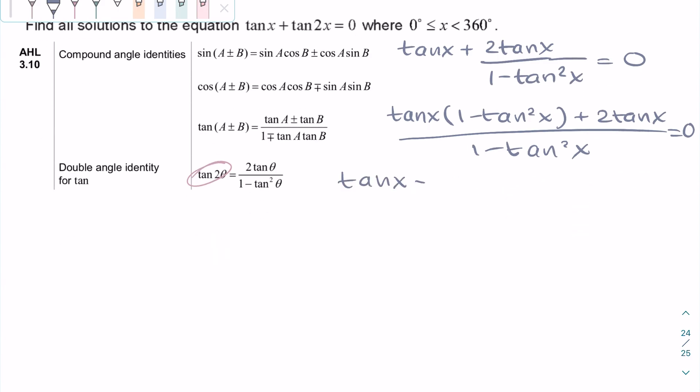A rational function is equal to 0 when its numerator is equal to 0. So we can just omit the denominator.